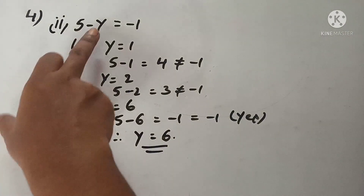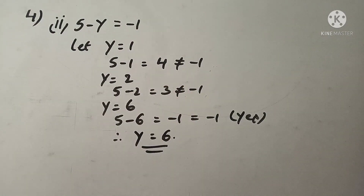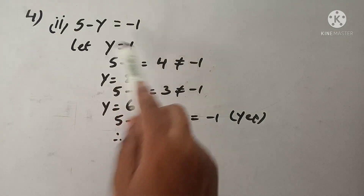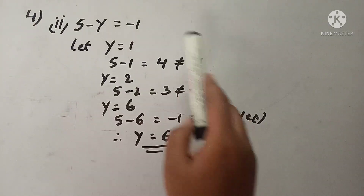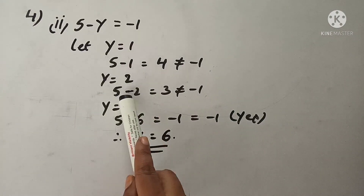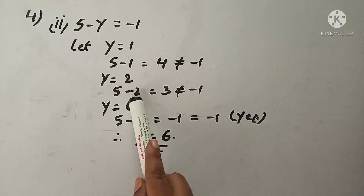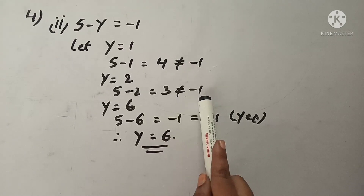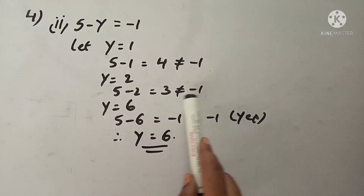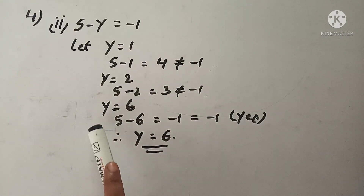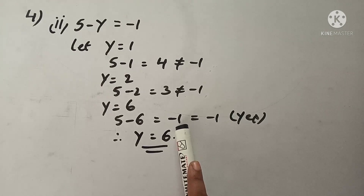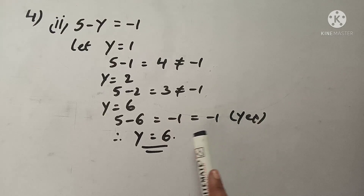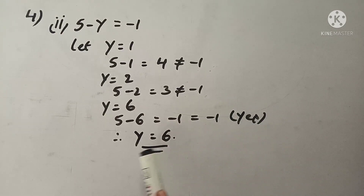See the second question: 5 minus y is equal to minus 1. Let us take some values for y. Y equals 1: 5 minus 1 is 4, not equal to minus 1. Y equals 2: 5 minus 2 is 3, not equal to minus 1. Let us take y equals 6: 5 minus 6 is minus 1 which equals RHS. So y is equal to 6.